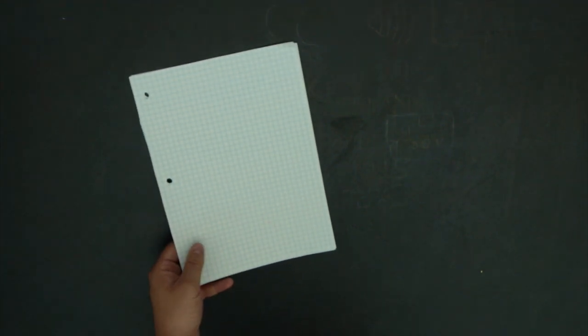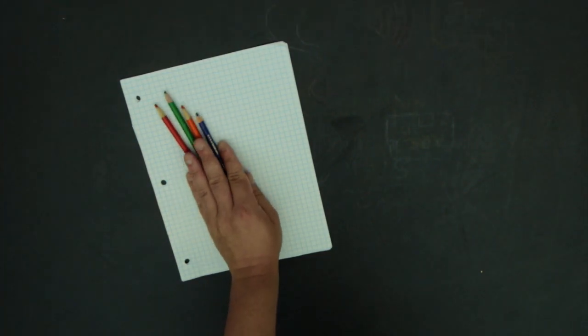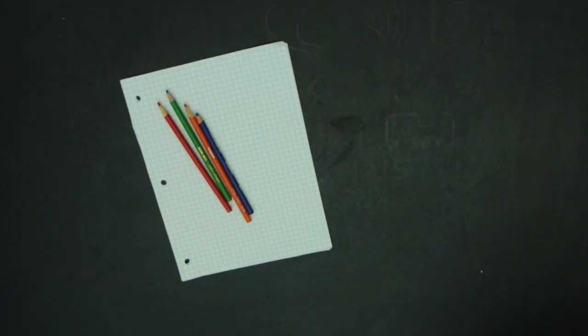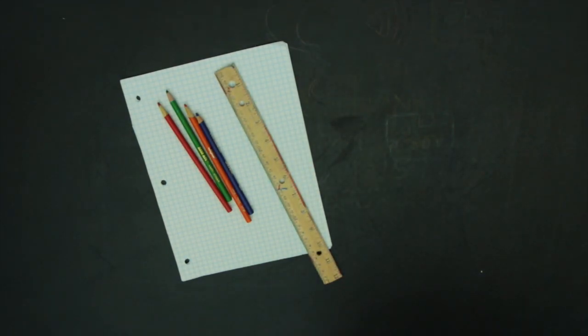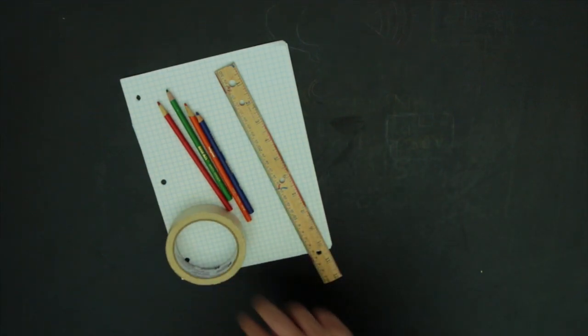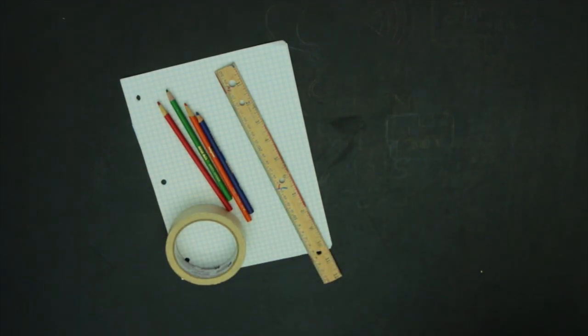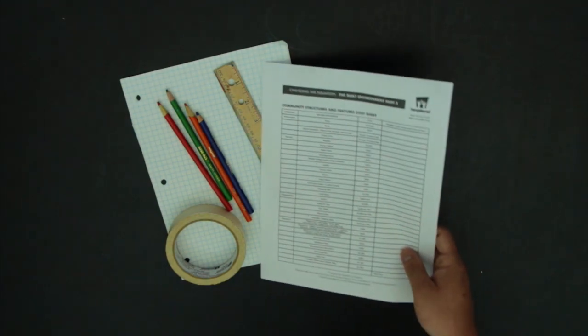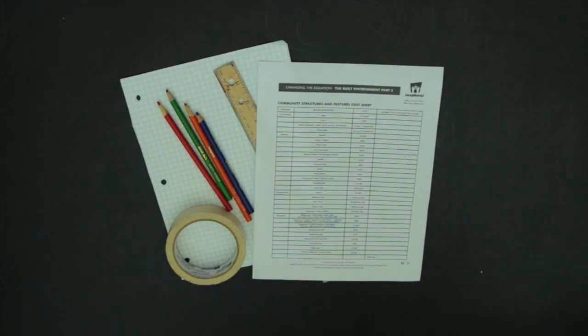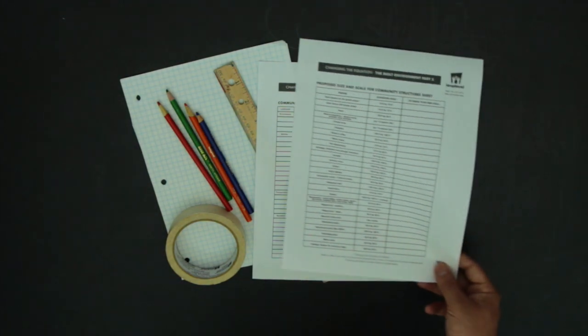Here's what you'll need for each group of 3-4 students: 6 sheets of graph paper, several colored pencils, 1 ruler, glue or tape, 1 copy of the Community Structures and Features Cost Sheet which can be found on page BE11 of the Written Activity Guide, 1 copy of the Proposed Size and Scale for Community Structures Sheet which can be found on page BE12, and each group's list of structures and features for their community they developed in Activity 2.